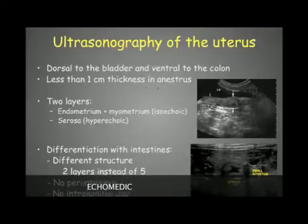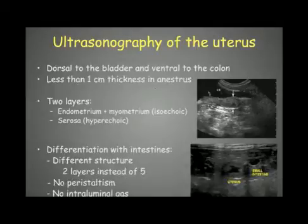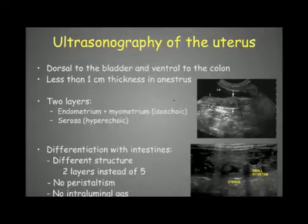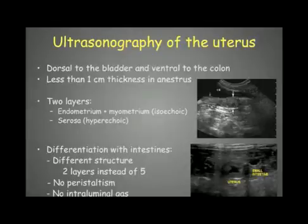The uterus is generally less than 1 cm in thickness at the level of the body during the anestrus period. It is composed of mostly two layers: the endometrium and myometrium, which are isoechoic, and the serosa, which is hyperechoic. Here we can see the hyperechoic serosa and the isoechoic endometrium and myometrium.